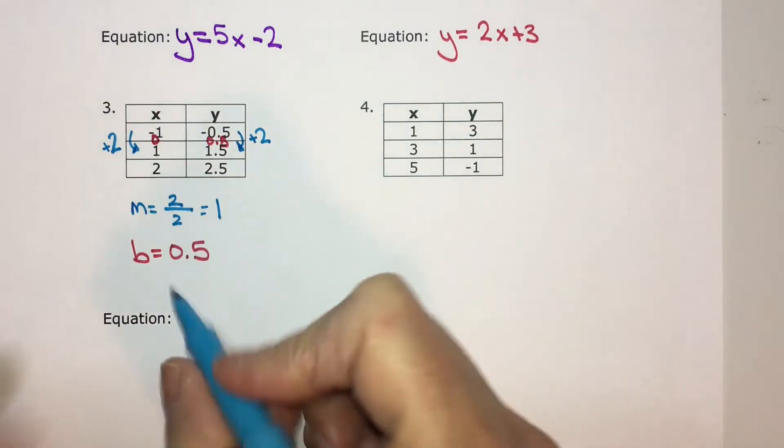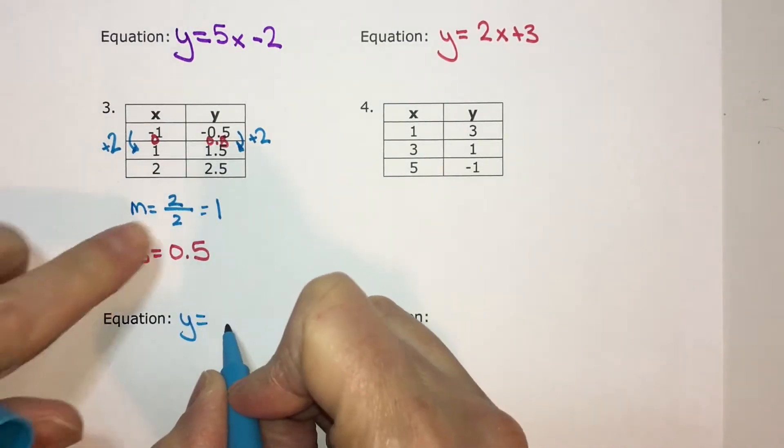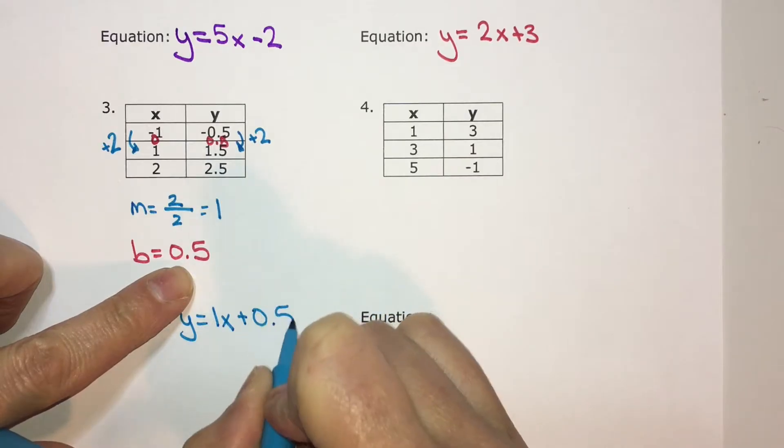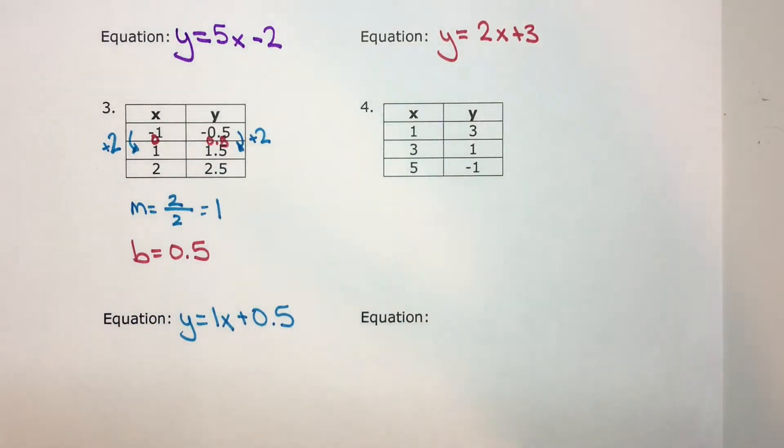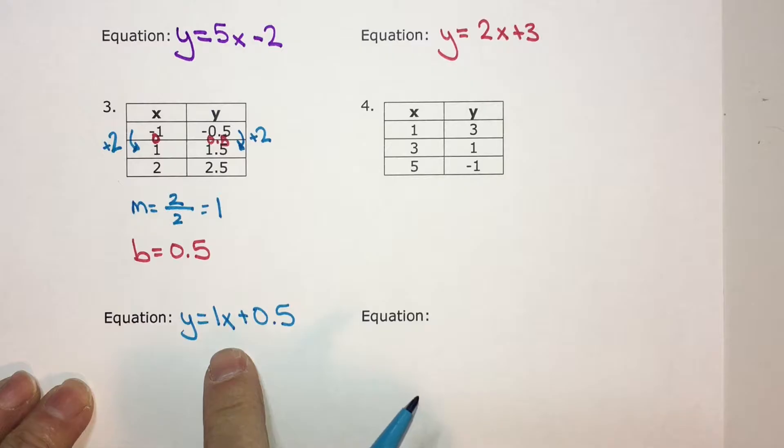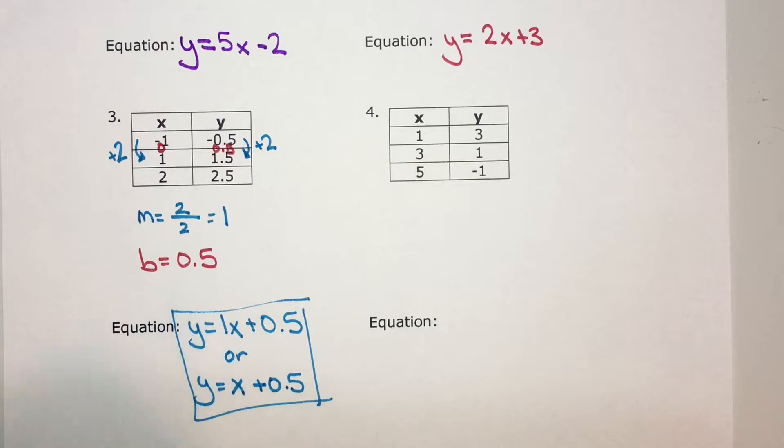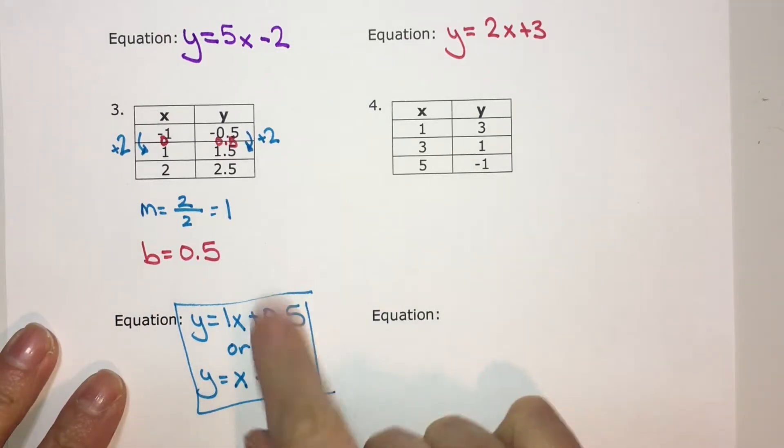The b value, or the y intercept, is positive 0.5. So the equation is y equals 1x plus 0.5. But another way of writing this is just y equals x plus 0.5, because if you have 1x, you have an x. So it's just simplified to write y equals x plus 0.5. Those are exactly the same.